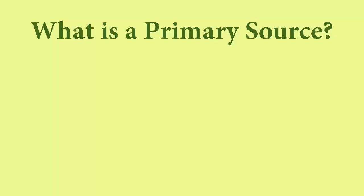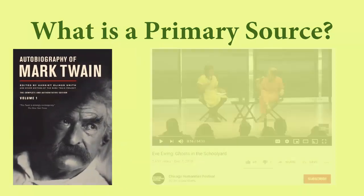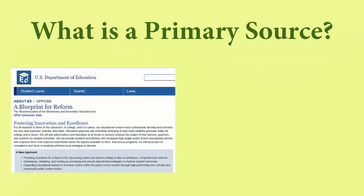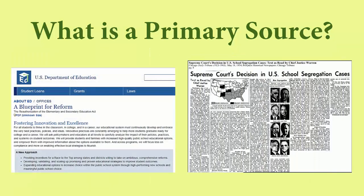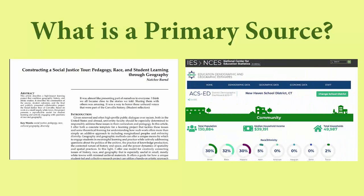A primary source is a direct source. It is something that is written by an eyewitness or participant. It may be an autobiography, interview, policy paper, or a historical newspaper article from a time that you're researching. Additionally, it can be an original research study in a scholarly journal or published by an organization.